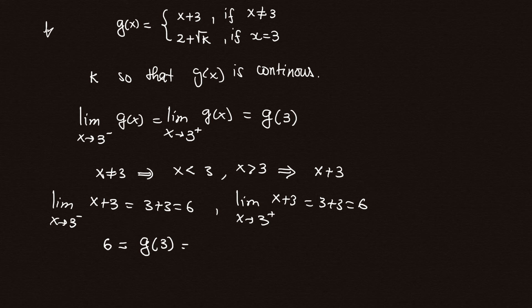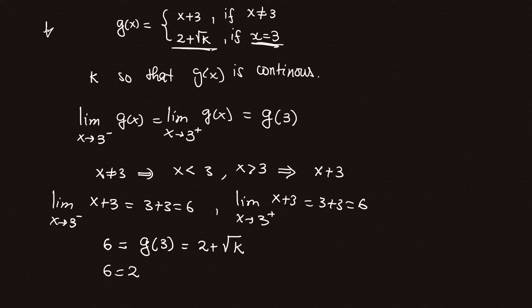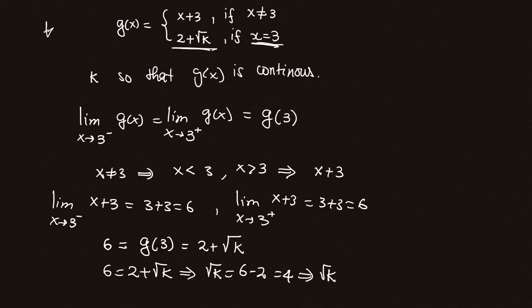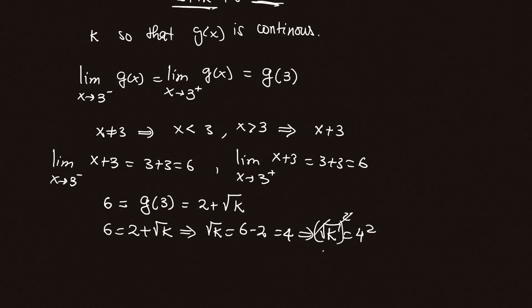Since both one-sided limits equal 6, for continuity g(3) must also equal 6. At x = 3 we use the other piece of the function: g(3) = 2 + √k. Setting this equal to 6 gives 6 = 2 + √k, so √k = 4, and squaring both sides gives k = 16. Therefore, if k = 16, this function will be continuous on any interval.